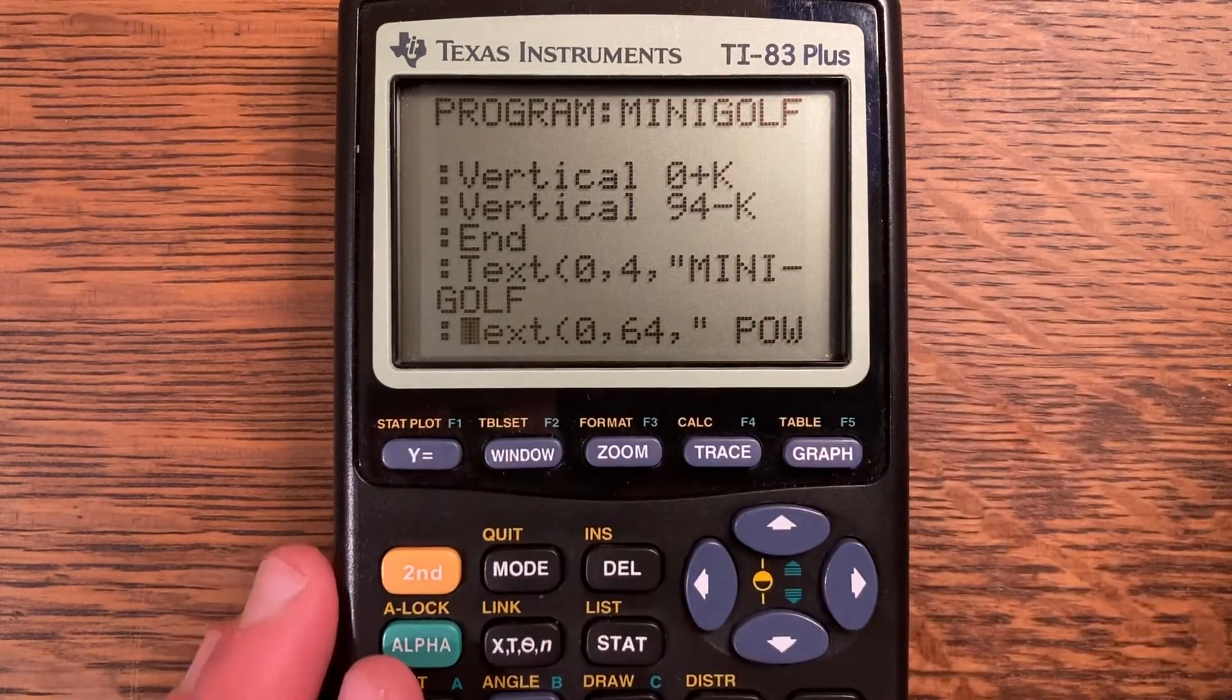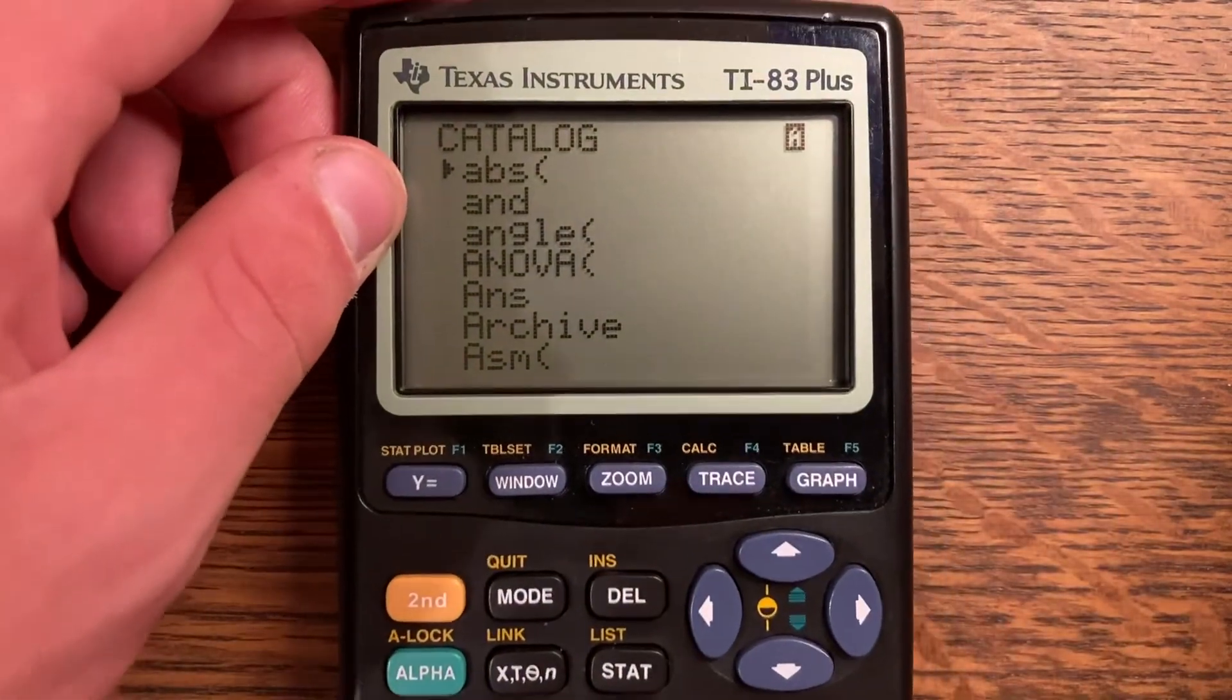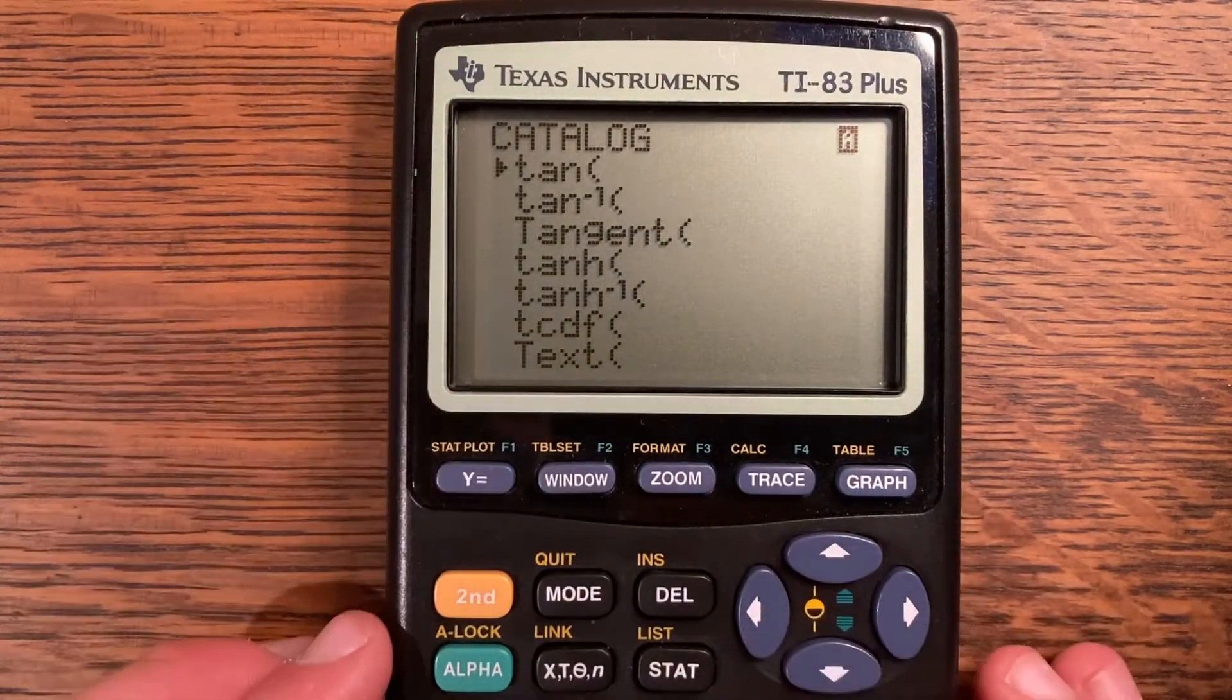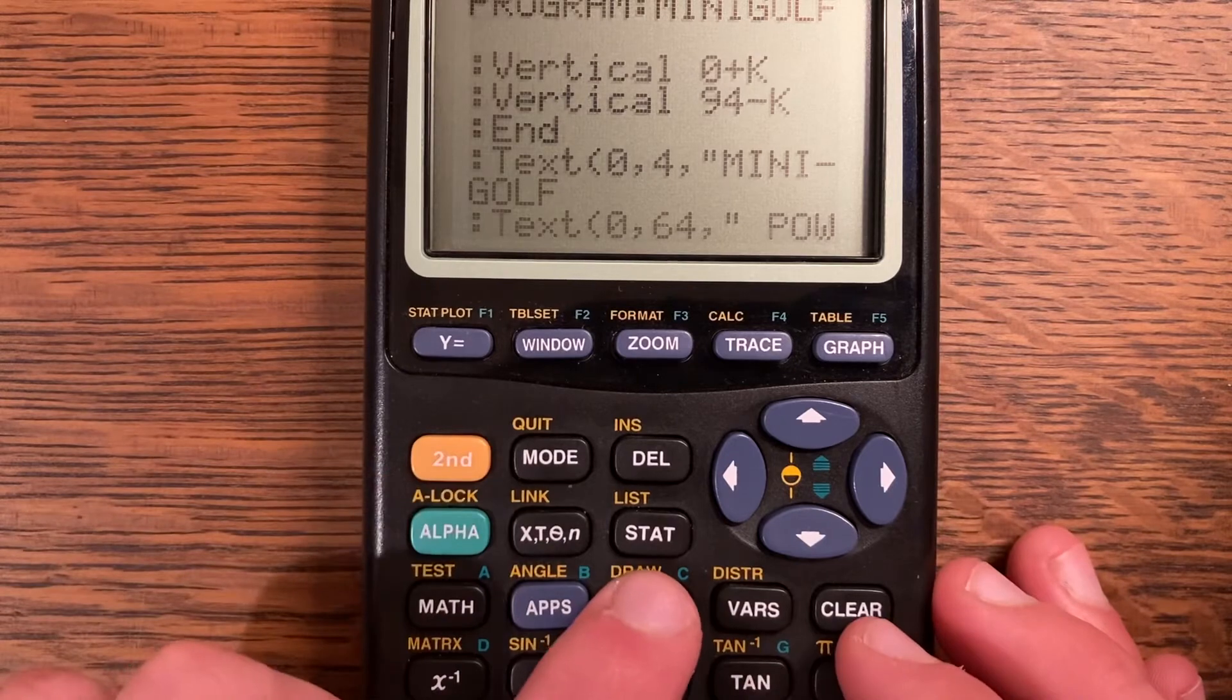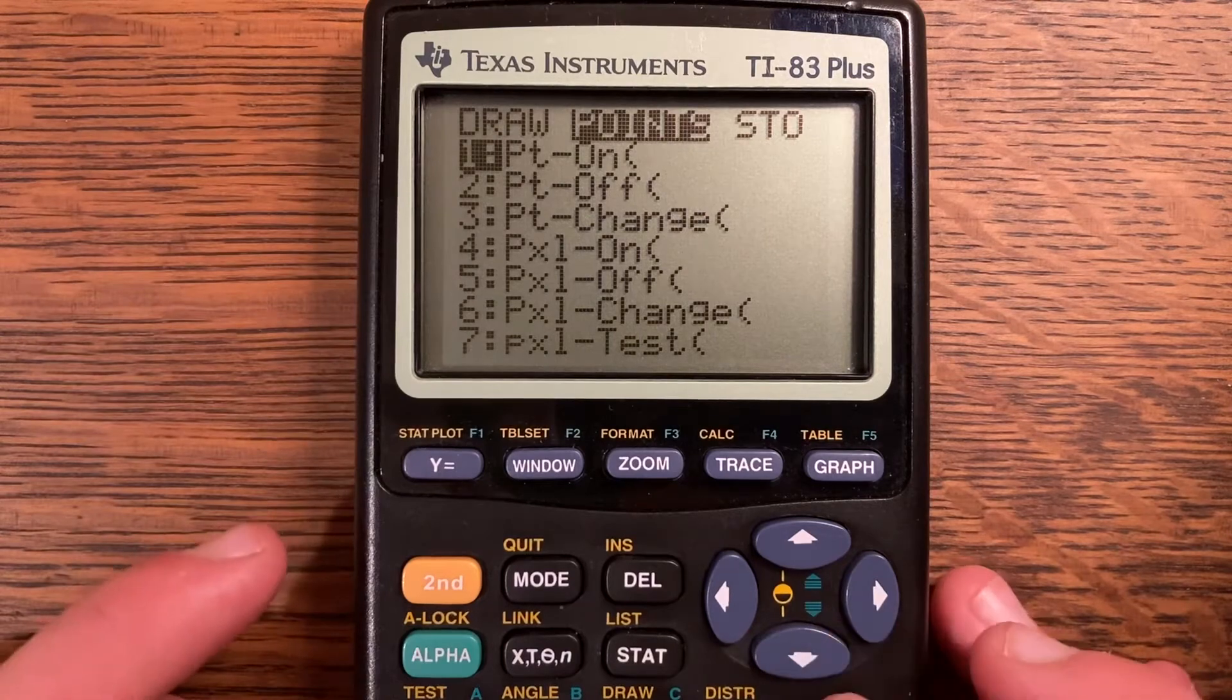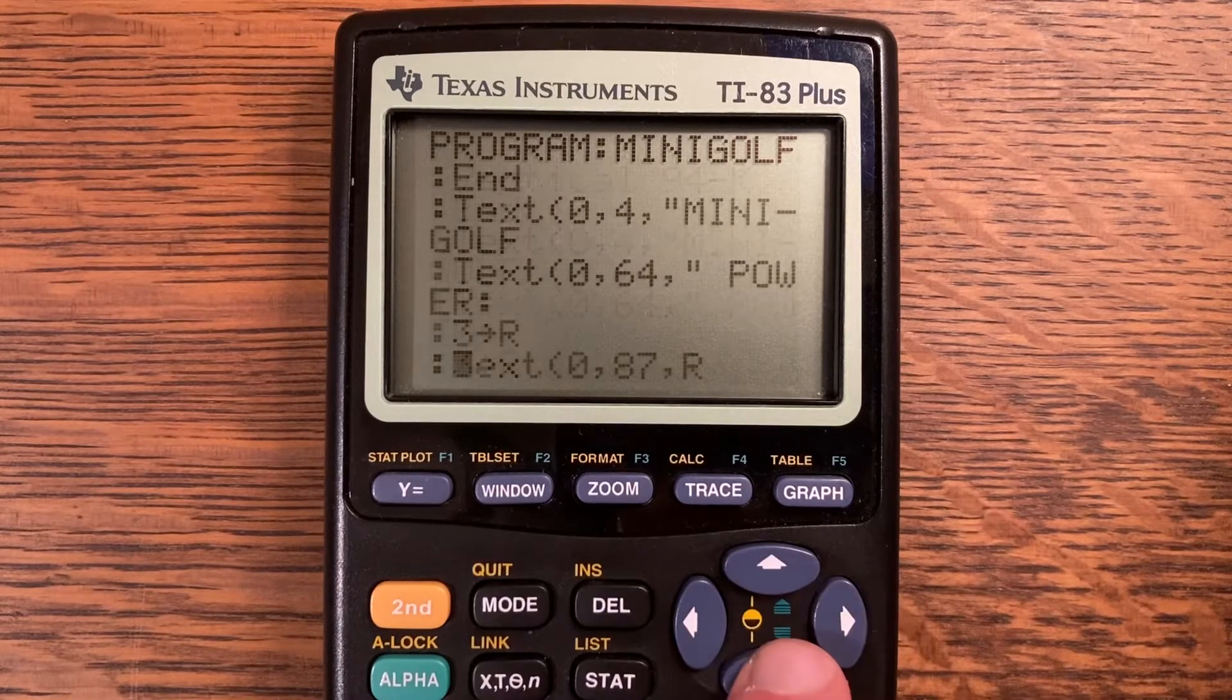And then also the vertical borders, vertical 0 plus K and vertical 94 minus K, and then end. And text 0 comma 4 comma quote mini golf. Remember, if you cannot find a command, you can go ahead and check the catalog, which is second zero. And this is an alphabetical list of almost everything on the calculator. If I were to click the key associated with T right here, you can see right there is text. But the easiest way to find it is in the draw menu, so second program gives you the draw menu. As you can see, clear draw, line, and at the very bottom will be text.